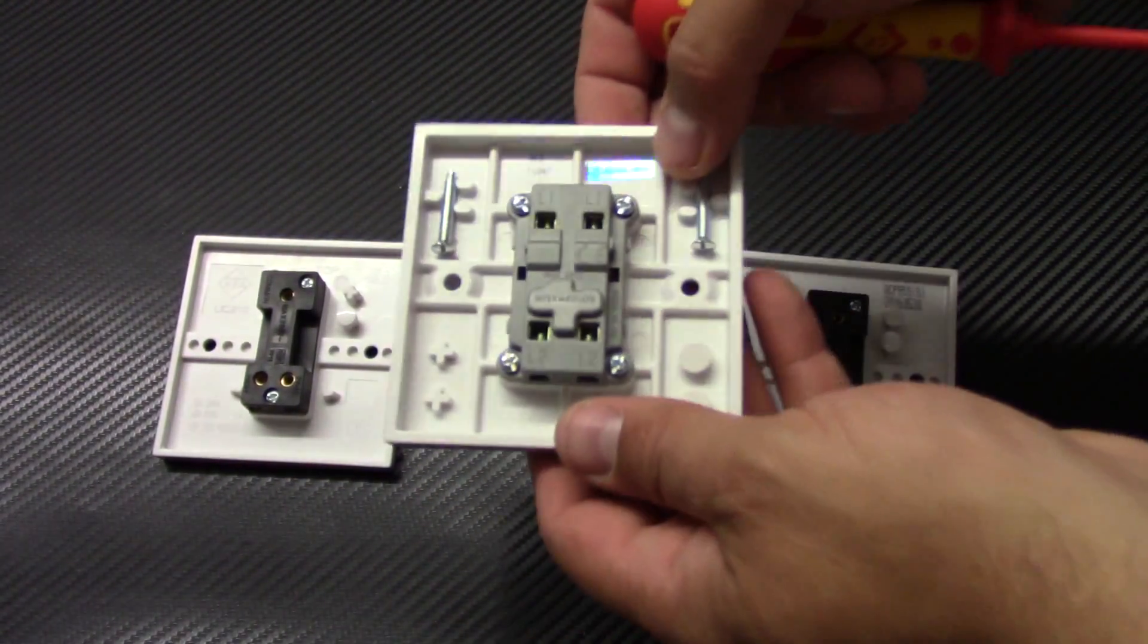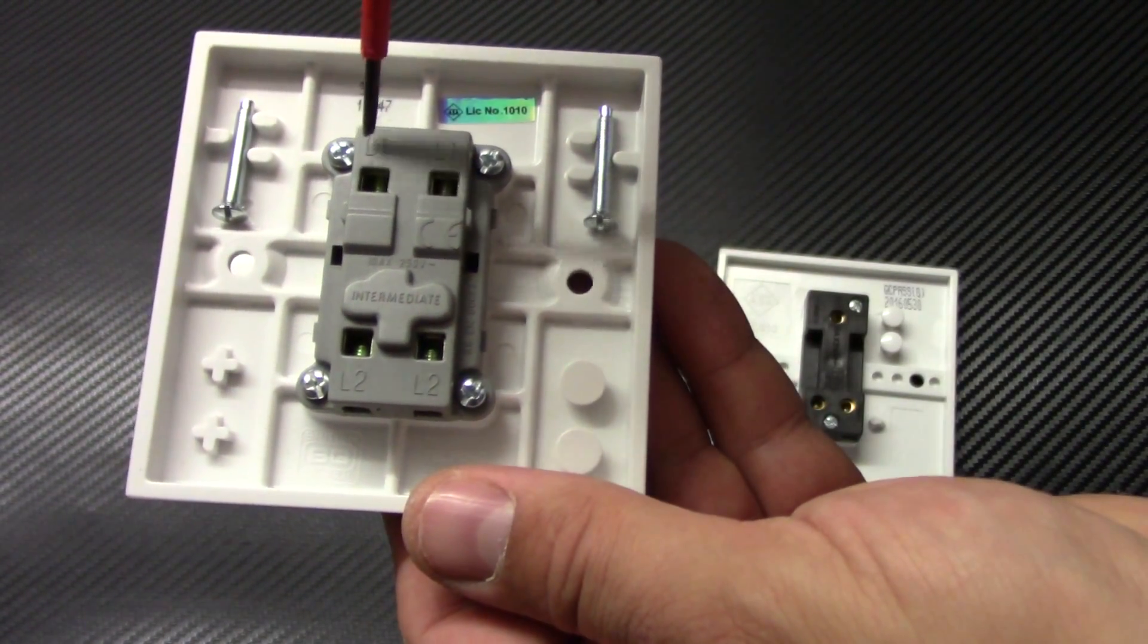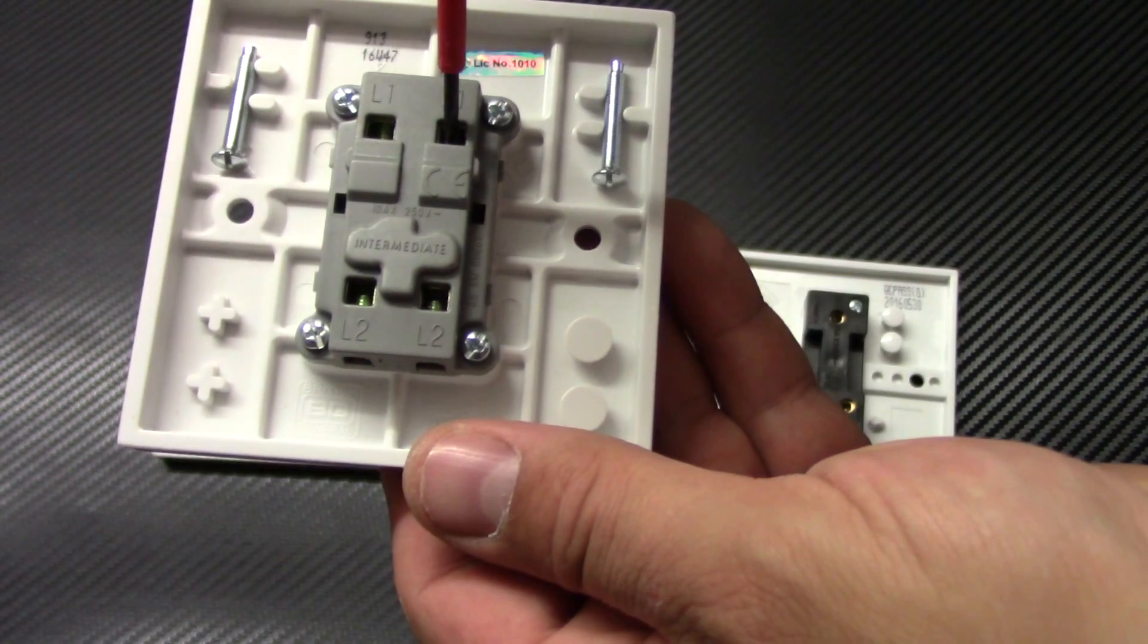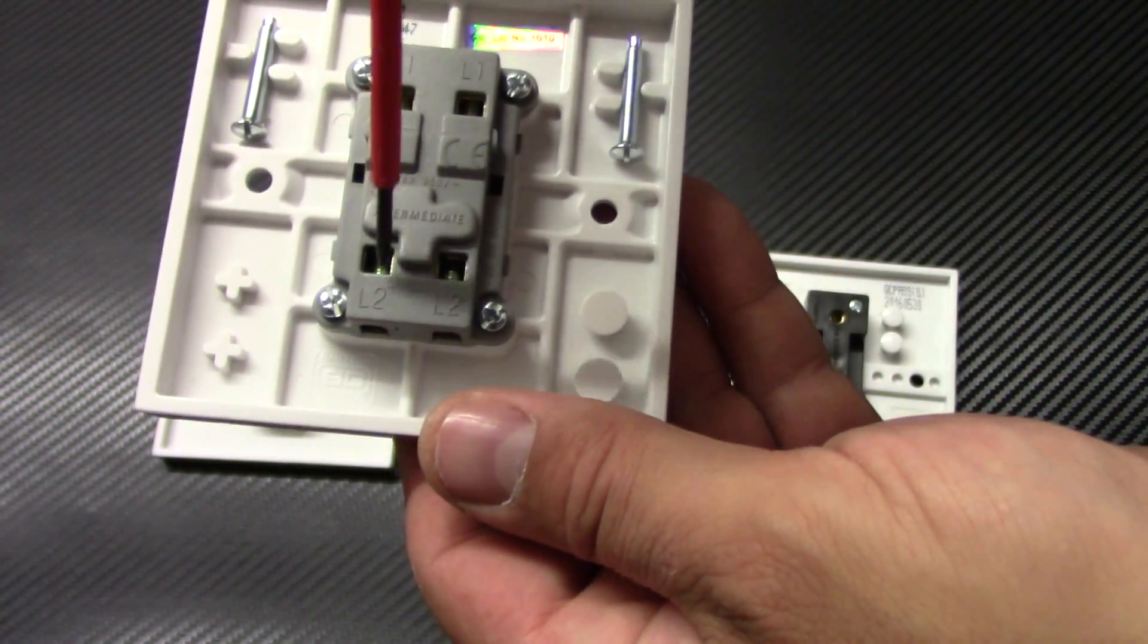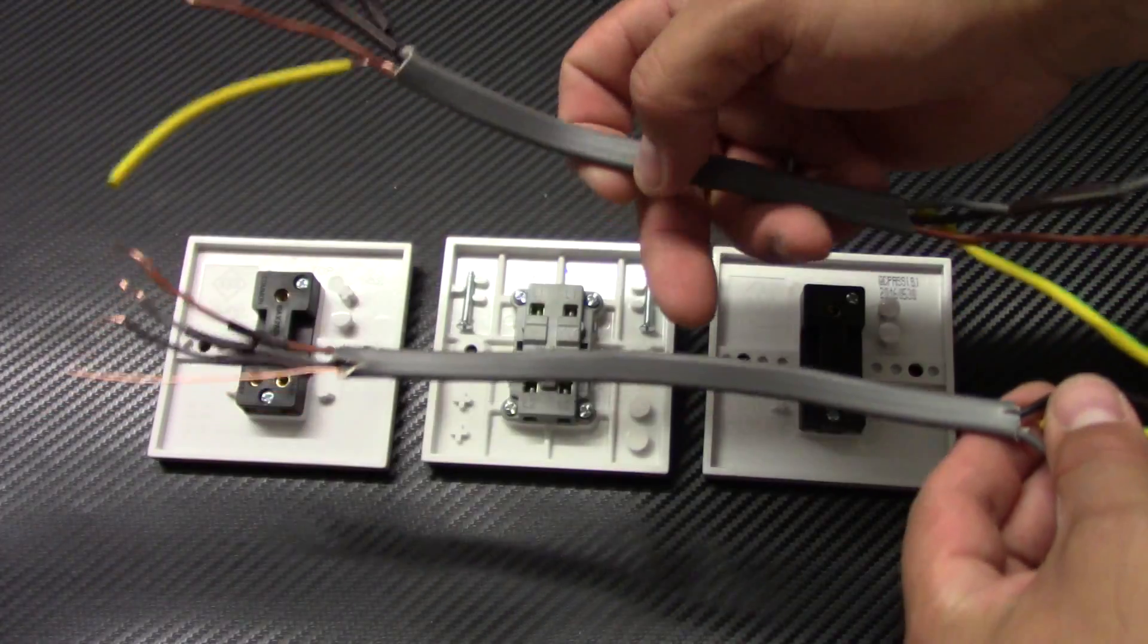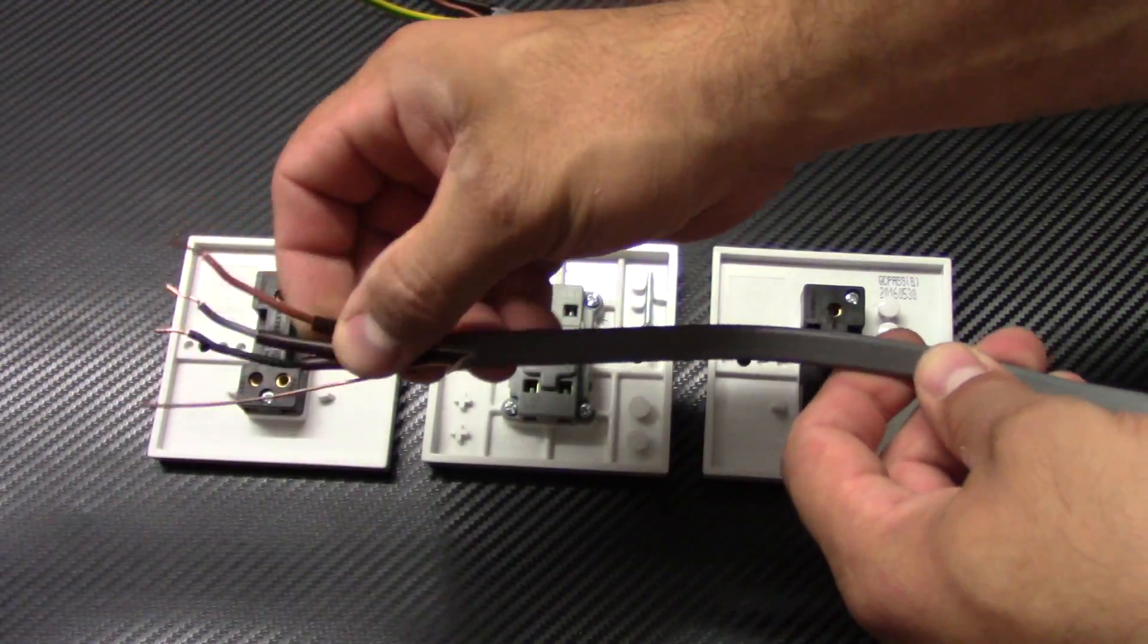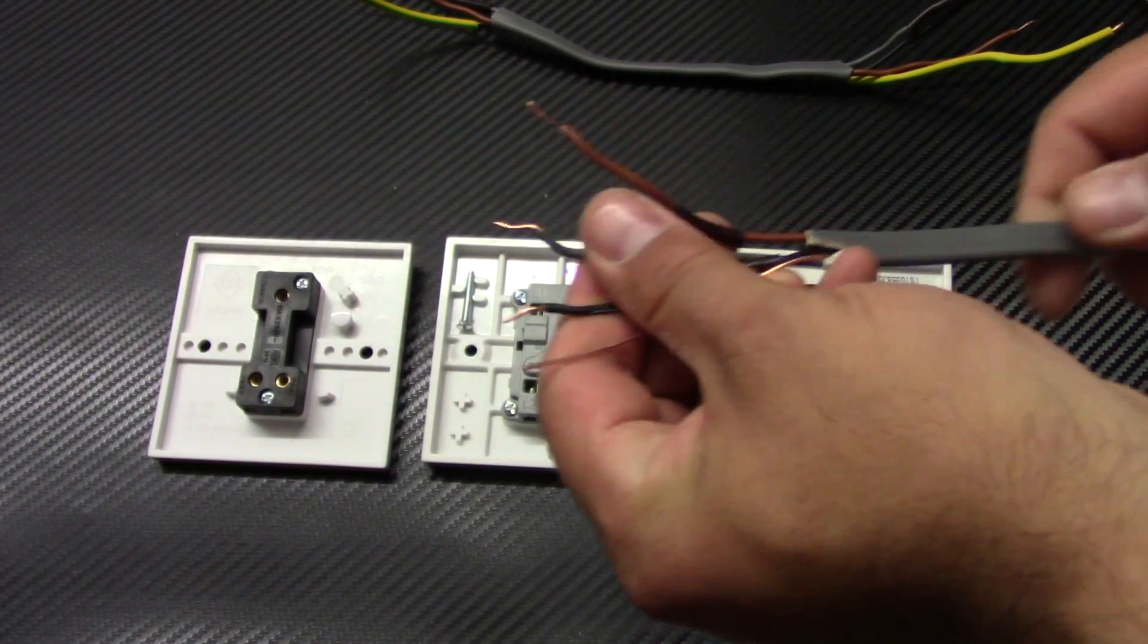And we've got the intermediate switch. It's got four terminals. L1, L1 and opposite L2, L2. I've got these two pieces of 3-core and earth cable. So I want to show you how to connect it together.